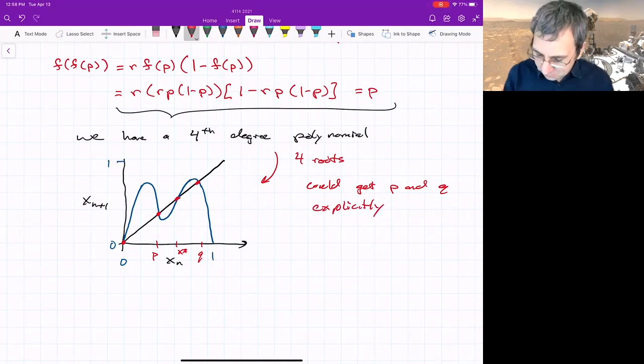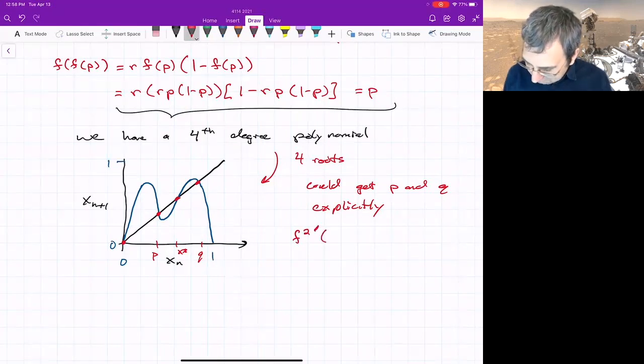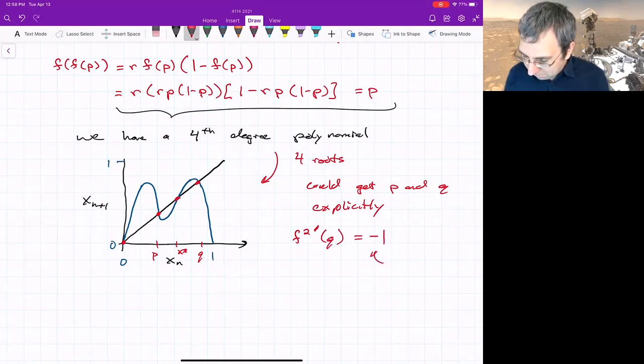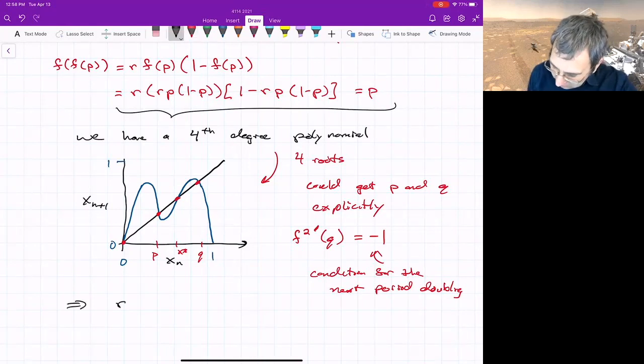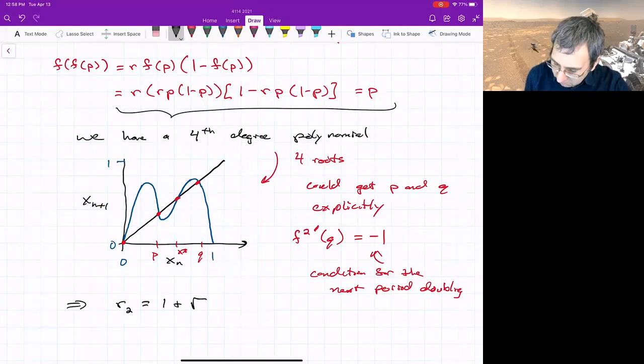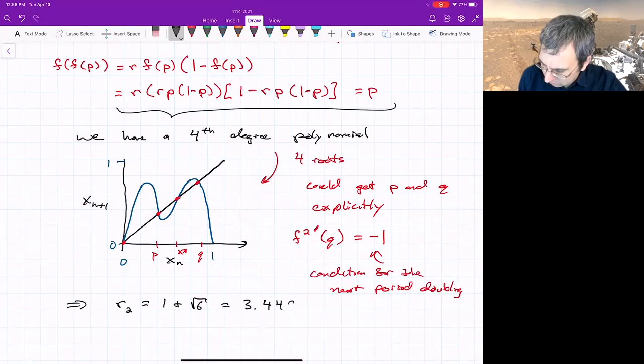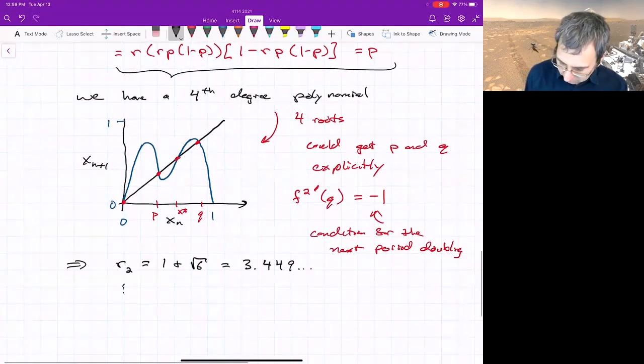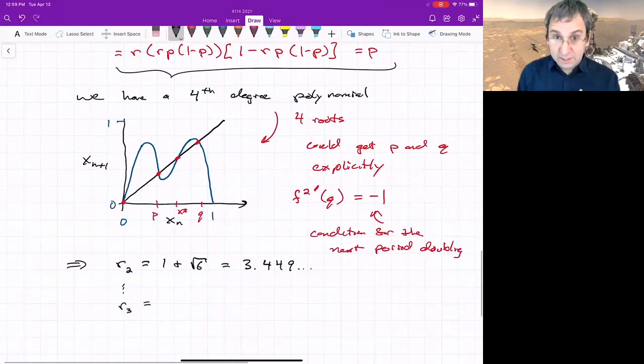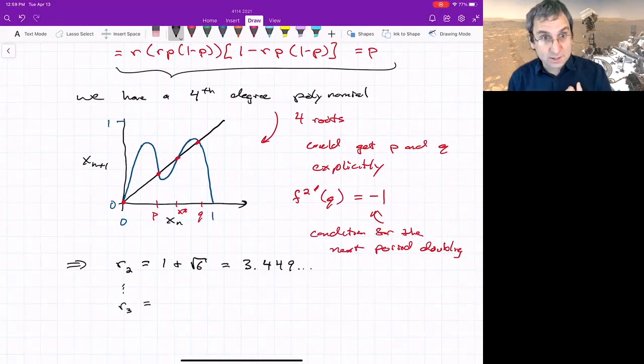What's the next bifurcation? At one of these points, where does the slope, where does f²'(P) or Q, when does that equal -1? This would be the condition for the next period doubling. You can find it. It turns out that happens at R2, the value of R equal to 1 + √6, which is 3.449 and so on. You could start looking for R3. We're getting to the limits of what we can analytically solve for, so it ends up coming computationally.